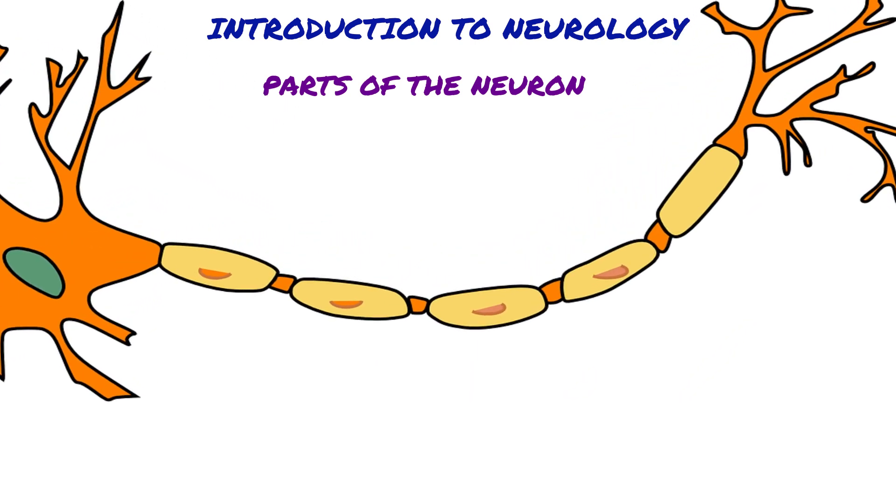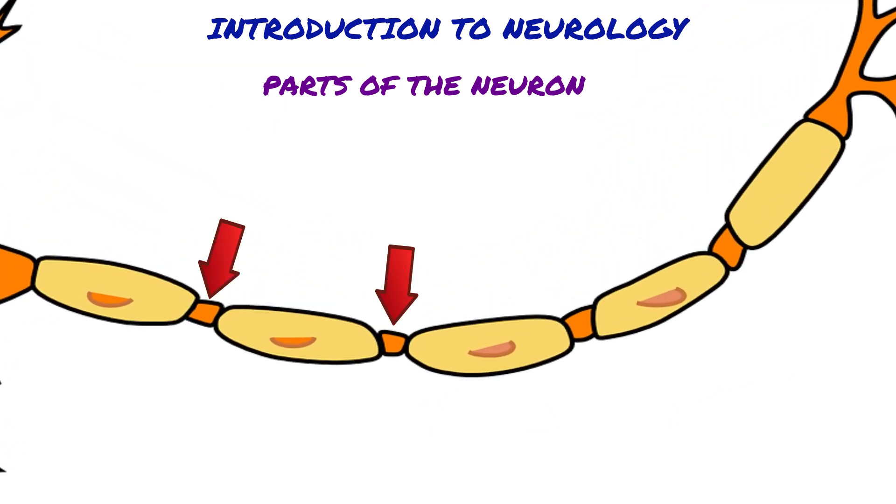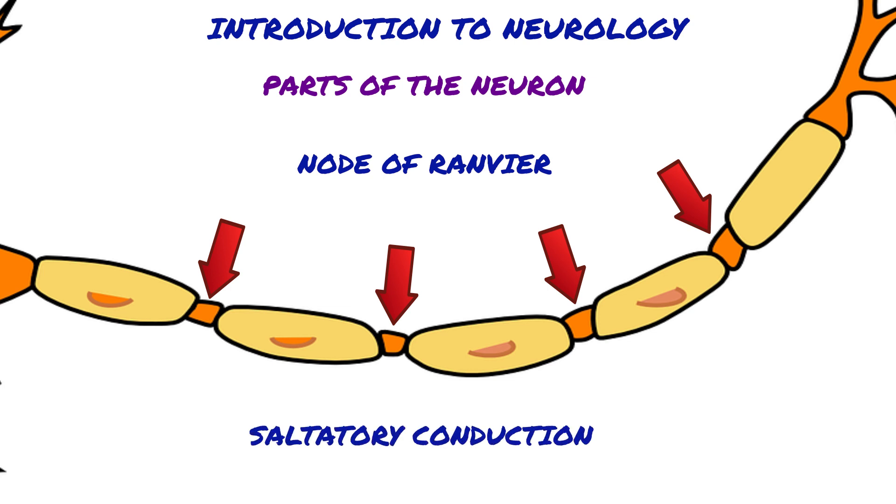There are unmyelinated regions between two adjacent myelinated segments of axons, and they are called node of Ranvier. Node of Ranvier allows saltatory conduction, which increases the velocity of action potentials.